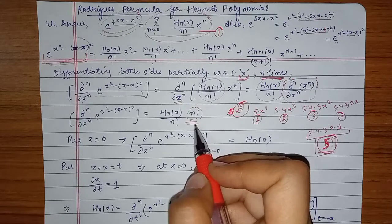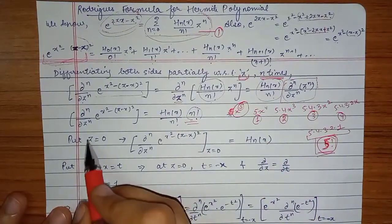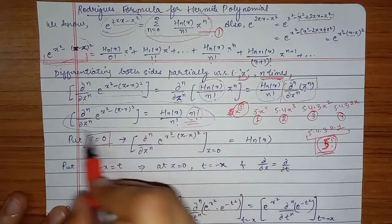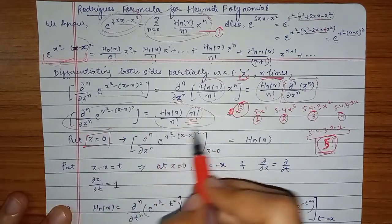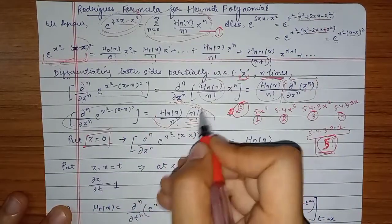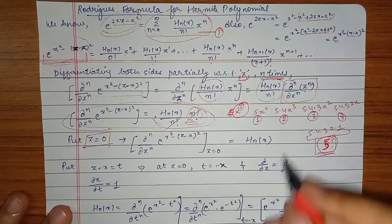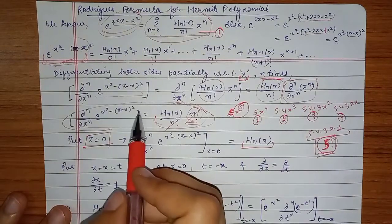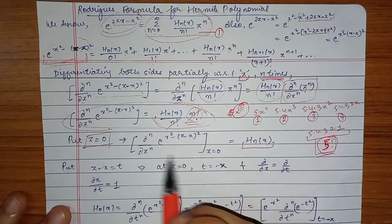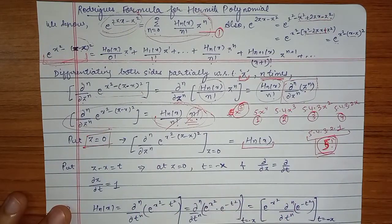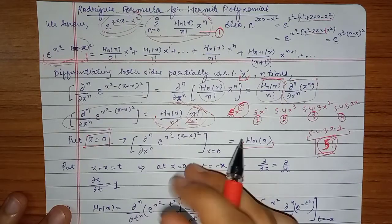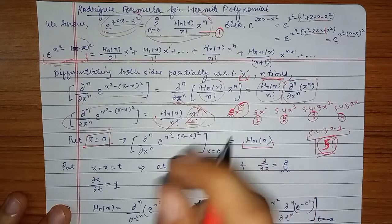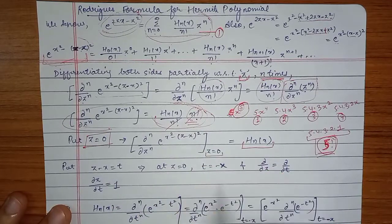Now we put z equal to 0. On the right-hand side the n factorial in the numerator and denominator cancel, leaving only H_n(x). On the left-hand side we have the n-th partial derivative with respect to z, evaluated at z=0.